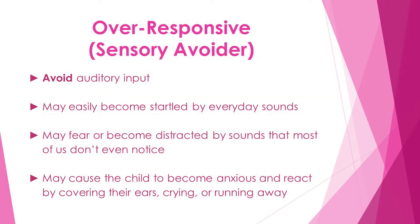If a child is over-responsive, they typically avoid auditory input because they are easily startled by normal, everyday sounds. These children may fear or become distracted by sounds that most of us don't even notice, such as vacuums, flushing toilets, fans, clocks, and outside traffic. This may cause them to become anxious and react by covering their ears, crying, or running away.